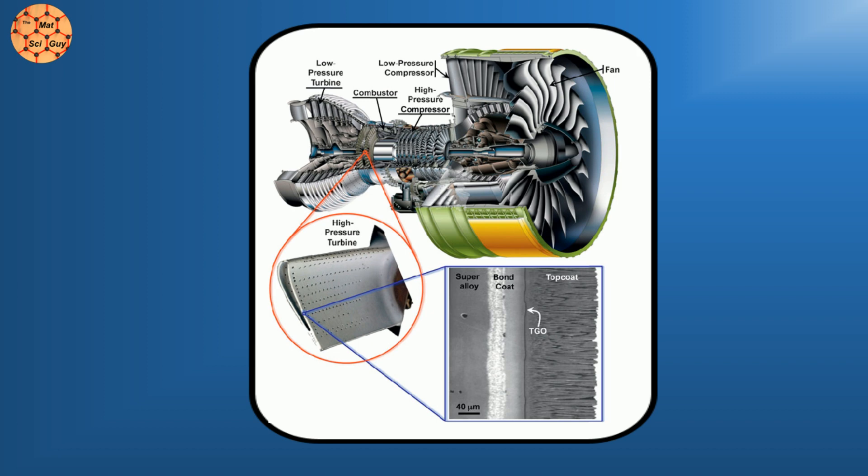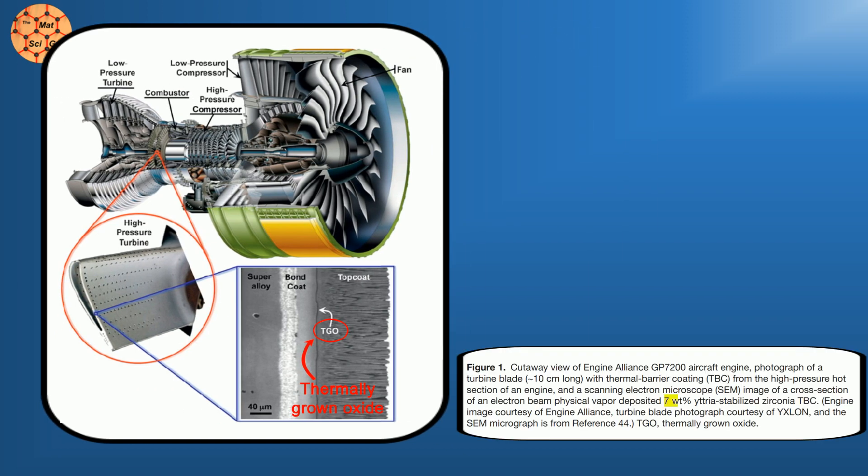See this thing in the jet engine cutaway labeled TGO? That stands for thermally grown oxide. Which oxide? 7 weight percent yttria stabilized zirconia, of course. This engine is the family that's powering the Airbus 380.